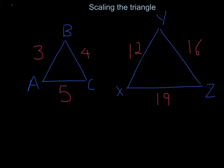However, if the sides were 12, 16, and 19, these triangles would not be similar because side XYZ does not have the same scale of 4 as the other two sides. However, corresponding sides must always have the same scale.